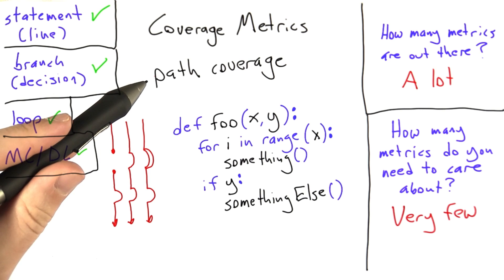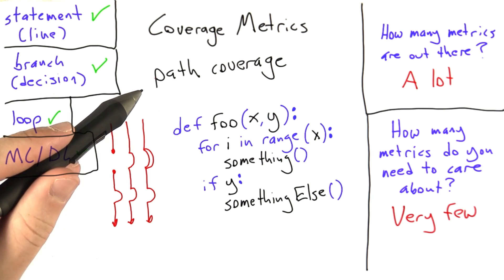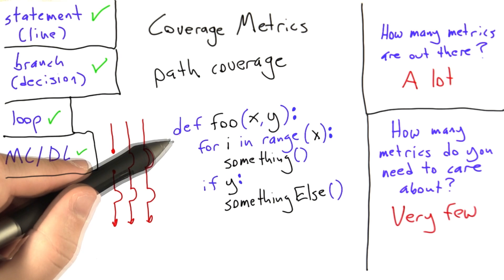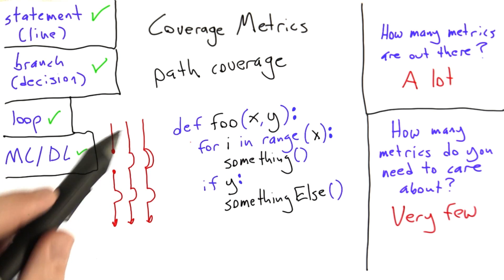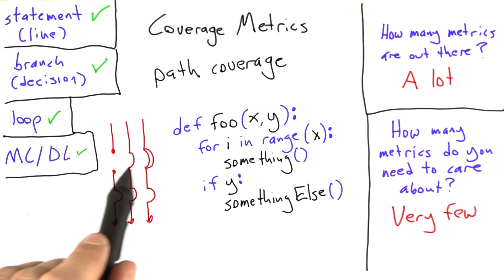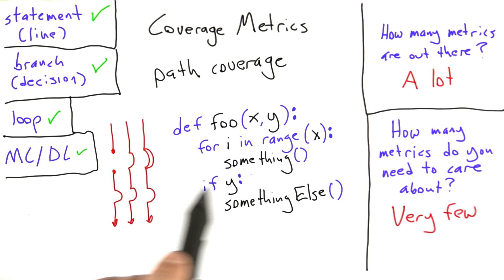So you can see that achieving path coverage is going to be impossible for all real code. But what it does is gives us something to think about when we're generating test cases because, of course, every possible path through the code might have a distinct behavior. So we'd like to test lots of paths through the code. We can't test them all.